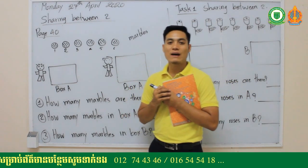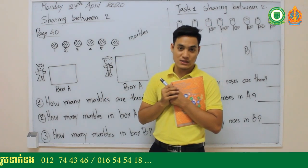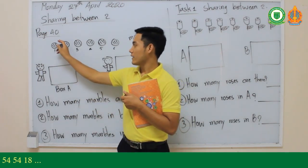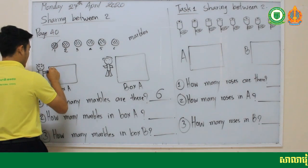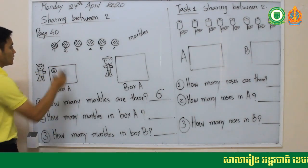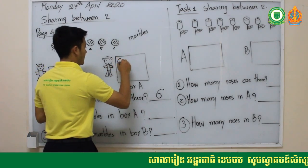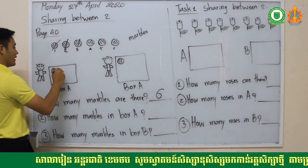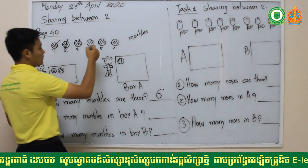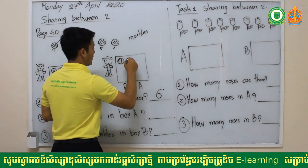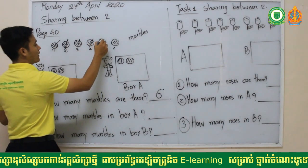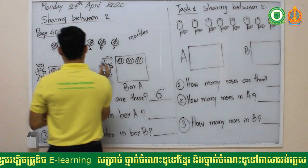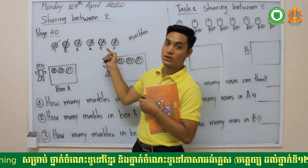Now you need to share between two. How do we share? The first marble — cross it out and draw one in box A. Then go to the second one and draw in box B. Continue alternating: draw in A, draw in B, until the fifth and sixth marbles are placed. No more marbles — you've already shared between two.